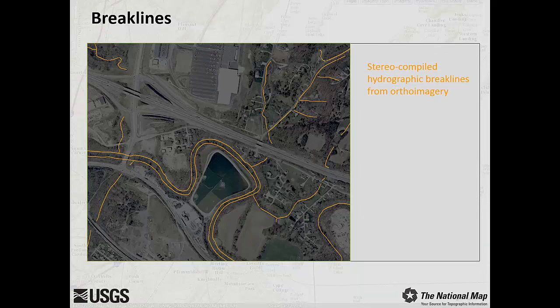Next, let's discuss brake lines. Brake lines are linear or polygonal features that describe a change in the smoothness or continuity of a surface. Brake lines ensure that known elevation values along a linear feature or within a polygonal feature are maintained with precision and continuity. This goal cannot be achieved using mass points, namely LiDAR points, alone. Brake lines are used to represent features such as drainage ditches, streams and rivers, ridges, road crowns and curbs, building footprints — most anything that is or creates a linear change in elevation or slope.